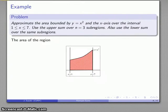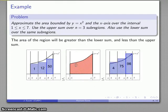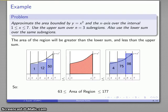Here's the nice picture to keep in mind: the area of the region will be greater than the lower sum, because those rectangles are completely contained within the region. The area will also be less than the upper sum, because those rectangles contain the region and then a little bit more. Because I know both numbers, the area of the region itself is going to be somewhere between 63 and 177. That leaves a fairly large interval of possible values, but we'll see if we can make that approximation more precise in the next video.